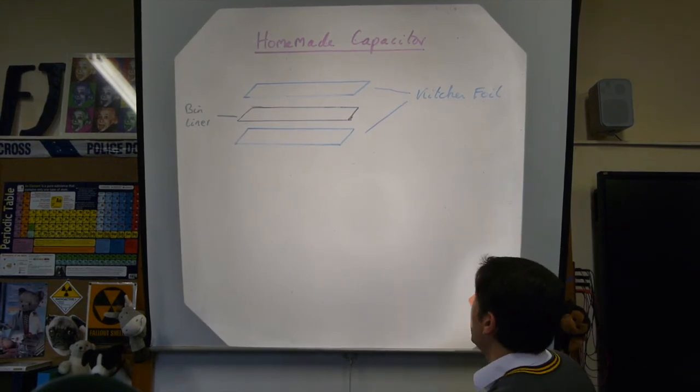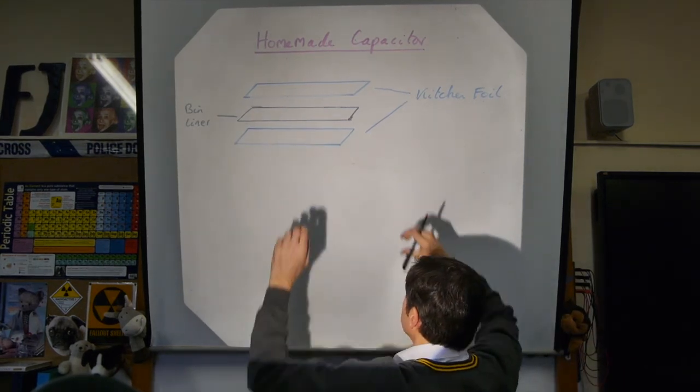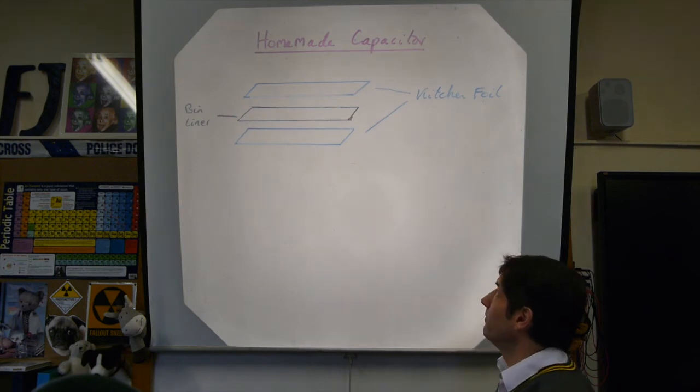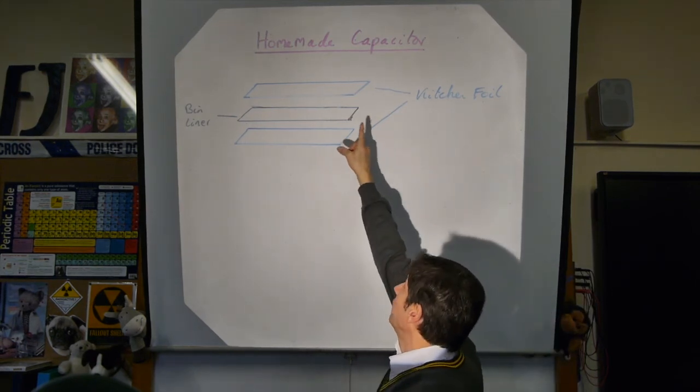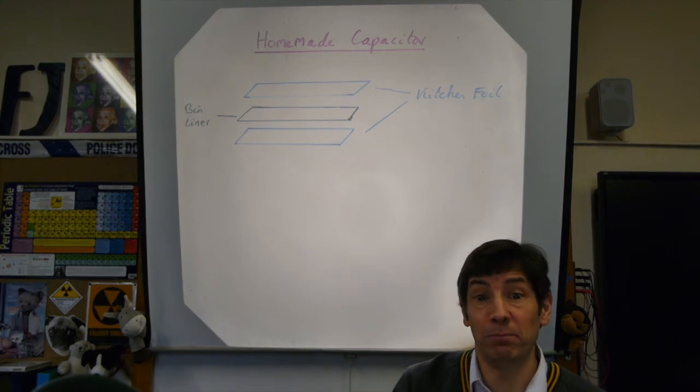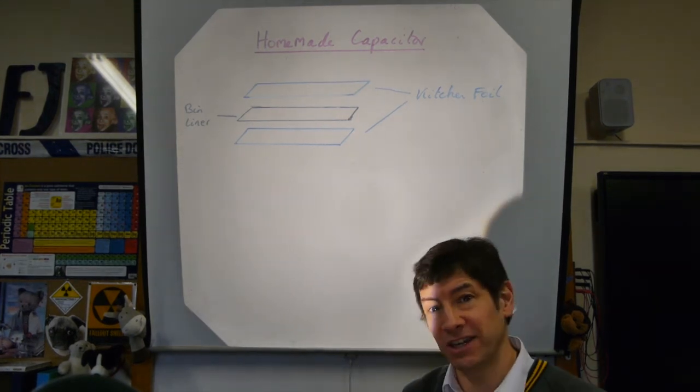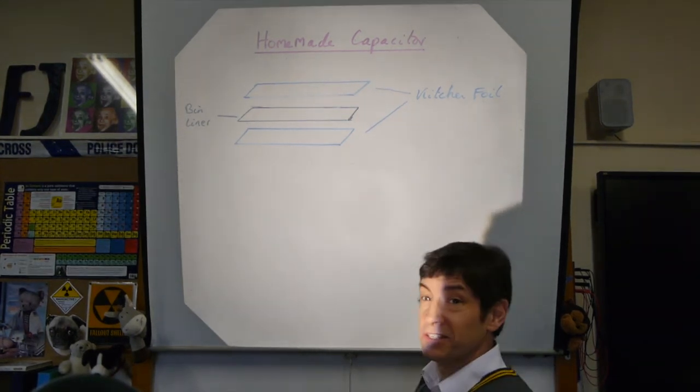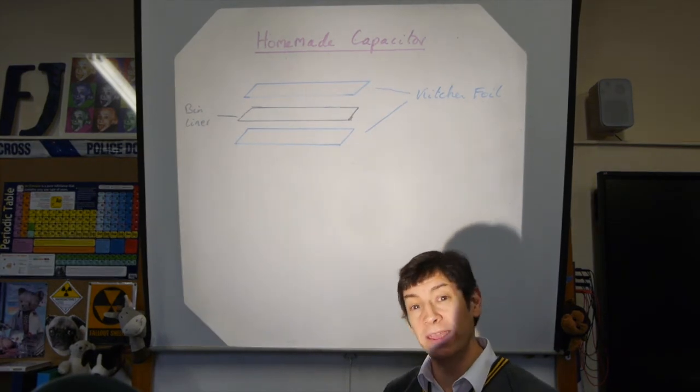Sandwich those two together with another sheet of aluminium. So here's our second sheet of kitchen foil. My drawing skills to the limit here as you probably notice. We haven't done too badly there. So what we've got is here and here we've got kitchen foil, aluminium foil. And between them we've got a plastic dielectric. Should we make the dielectric bin liner.